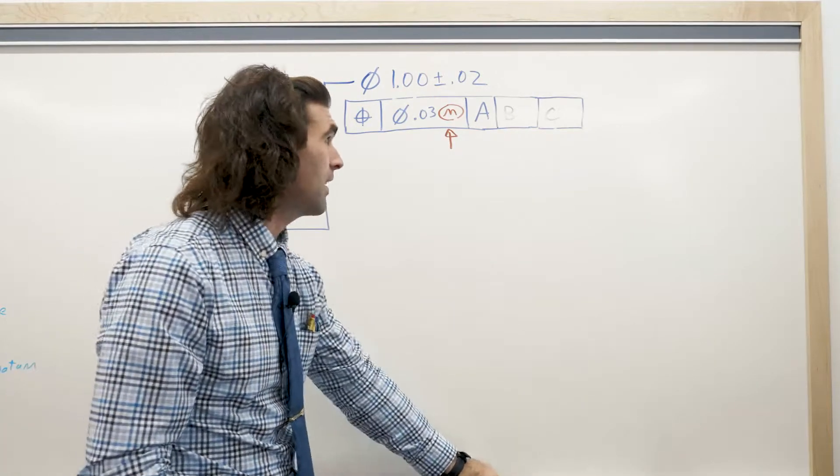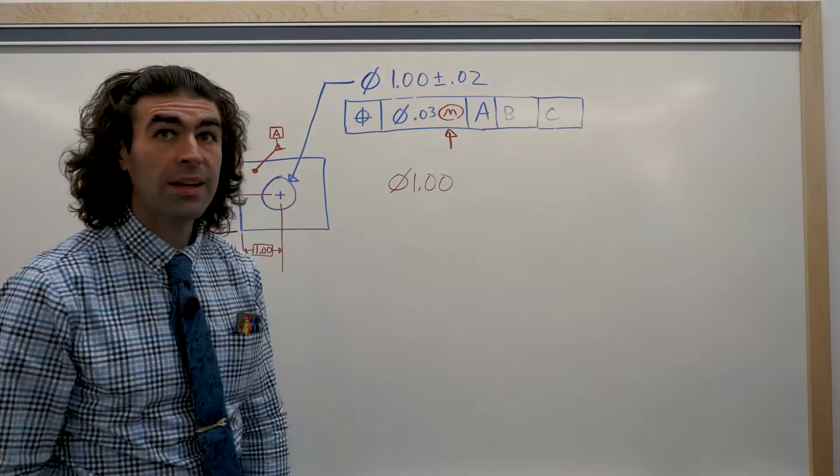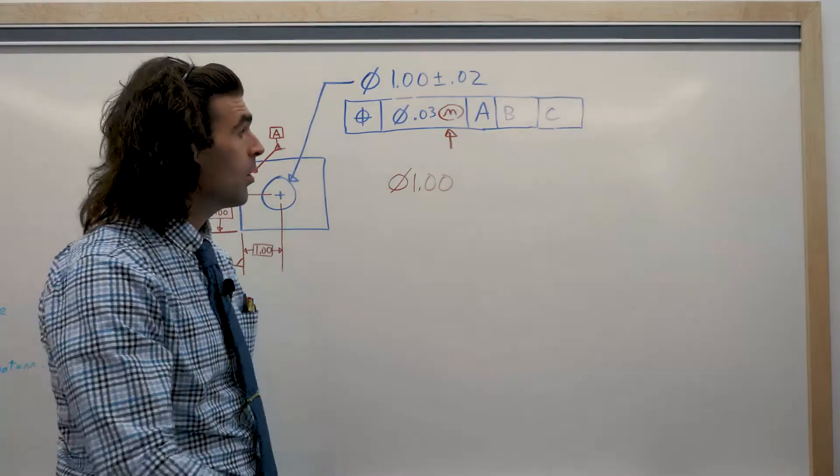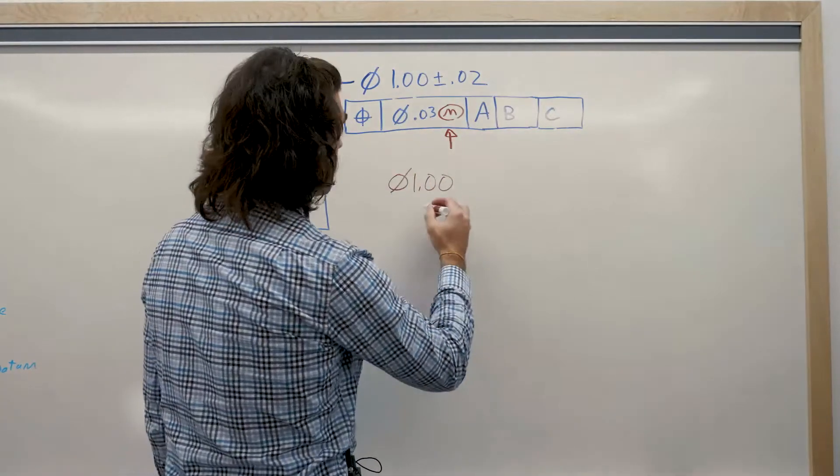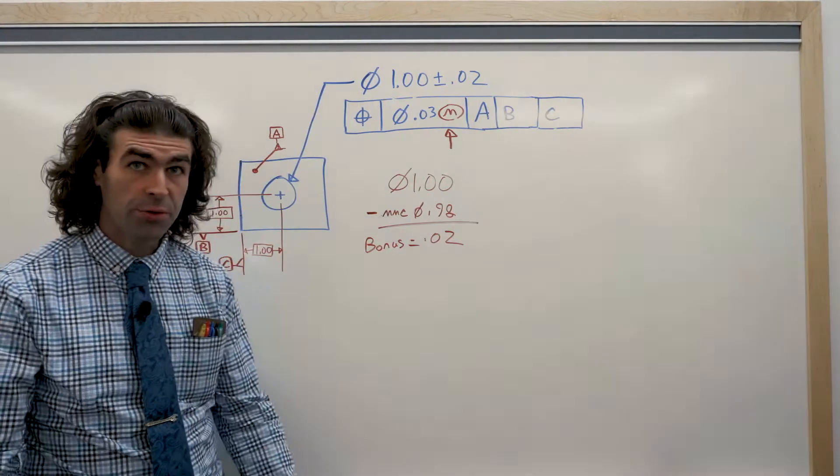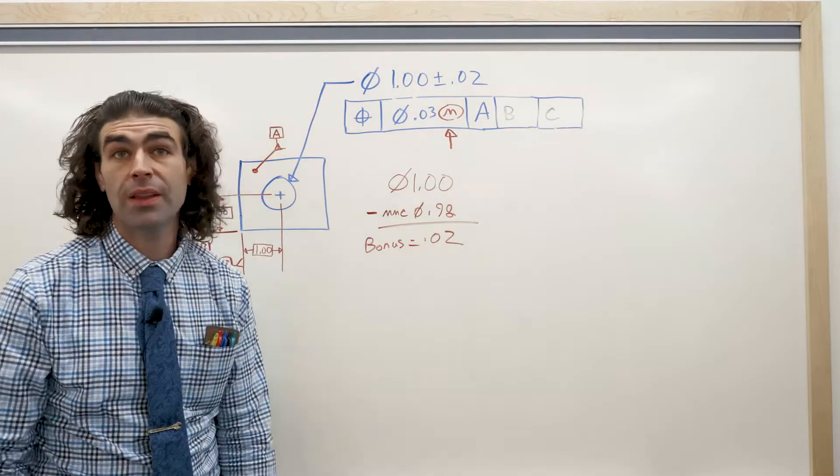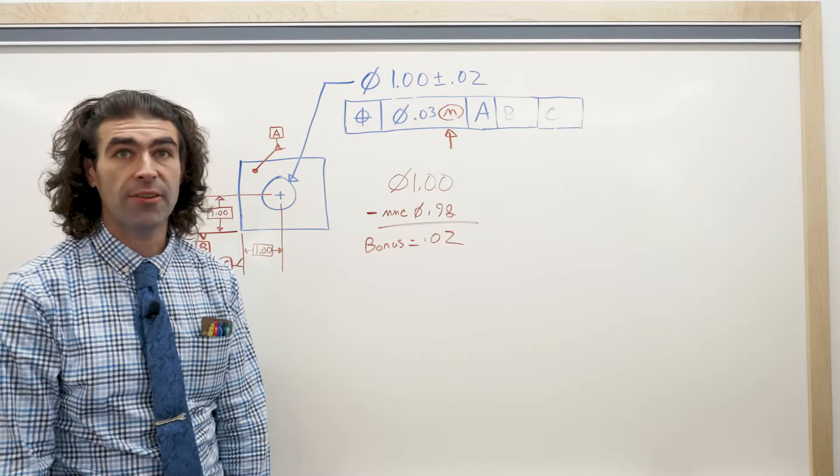Now, it doesn't have to be that. Let's say we measure and the hole comes in at exactly one inch, one inch minus the MMC, the one inch, the actual size, minus the MMC size is 20 thousandths. That 20 thousandths is our bonus tolerance.